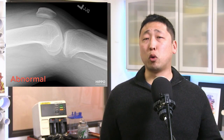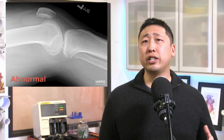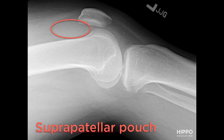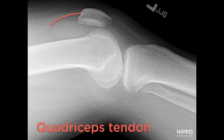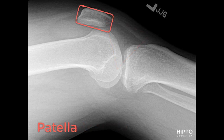Now let's look at an abnormal lateral knee x-ray. In knee effusions, you'll often see a homogeneous rounded soft tissue fluid density in the suprapatellar pouch. Depending on the severity of the knee effusion, you may see bowing of the quadriceps tendon as well as blurring of its posterior border. You may also see fluid density in Hoffa's triangle, as you can see here, and the patella may be anteriorly displaced.